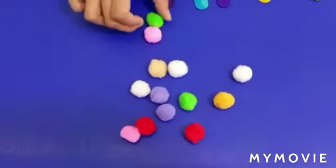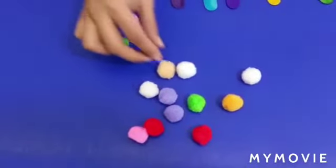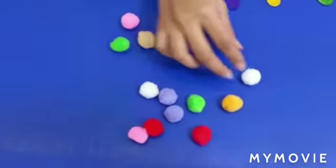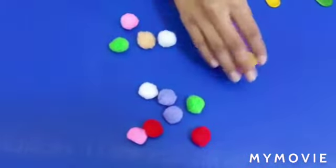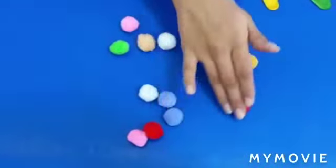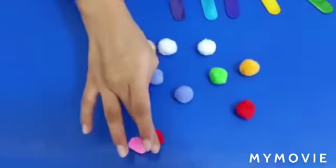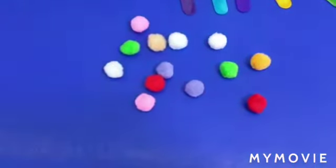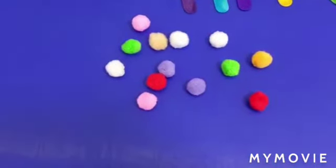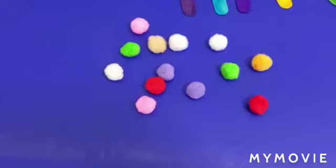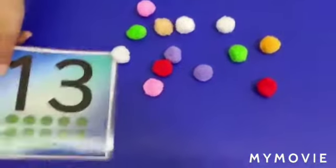Okay, now let's check the pom-poms. How many pom-poms do we have here? One, two, three, four, five, six, seven, eight, nine, ten, eleven, twelve, and thirteen. Very good. We have thirteen pom-poms.